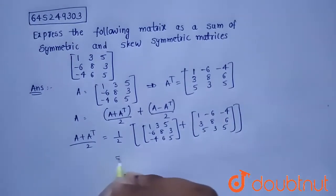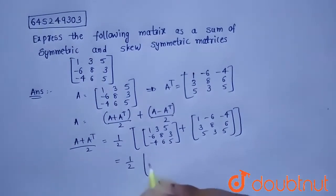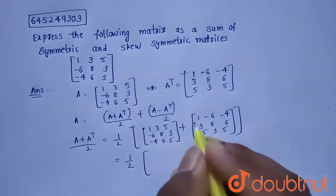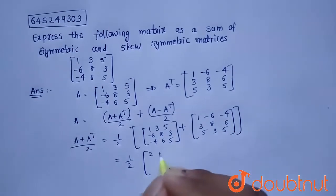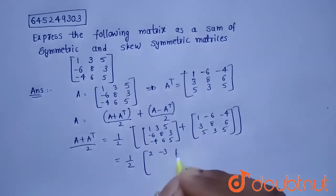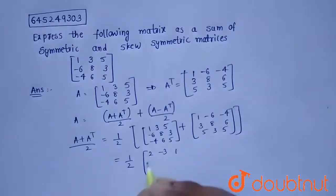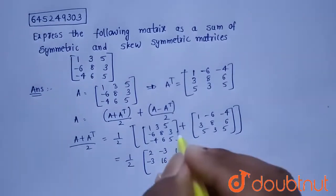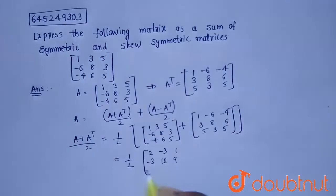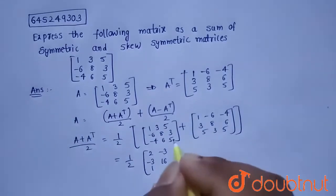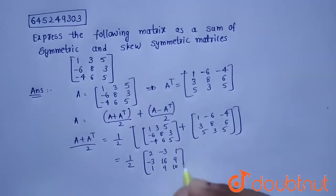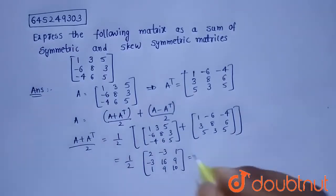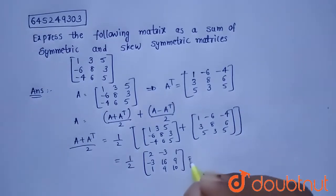On adding, we get (1/2) of: 1+1=2, 3+(-6)=-3, 5+(-4)=1; -6+3=-3, 8+8=16, 3+6=9; -4+5=1, 6+3=9, 5+5=10. So the symmetric matrix is [1, -3/2, 1/2; -3/2, 8, 9/2; 1/2, 9/2, 5].